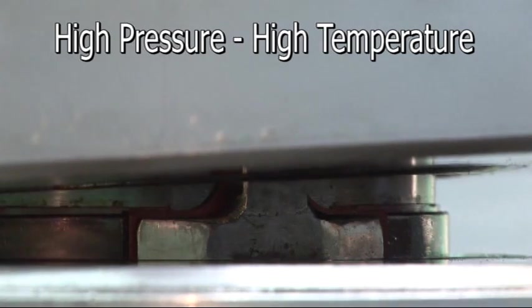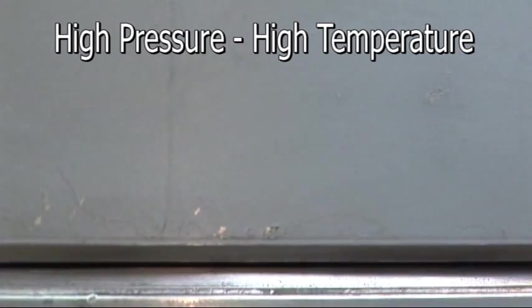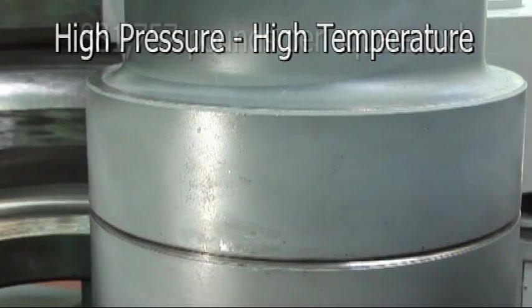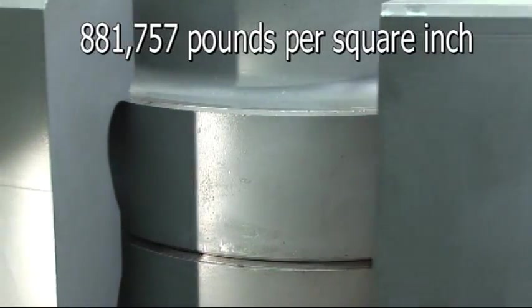It takes approximately three days, under 60,000 atmospheres of pressure, to create a three-carat diamond in the rough. Time will vary depending upon the carat size.